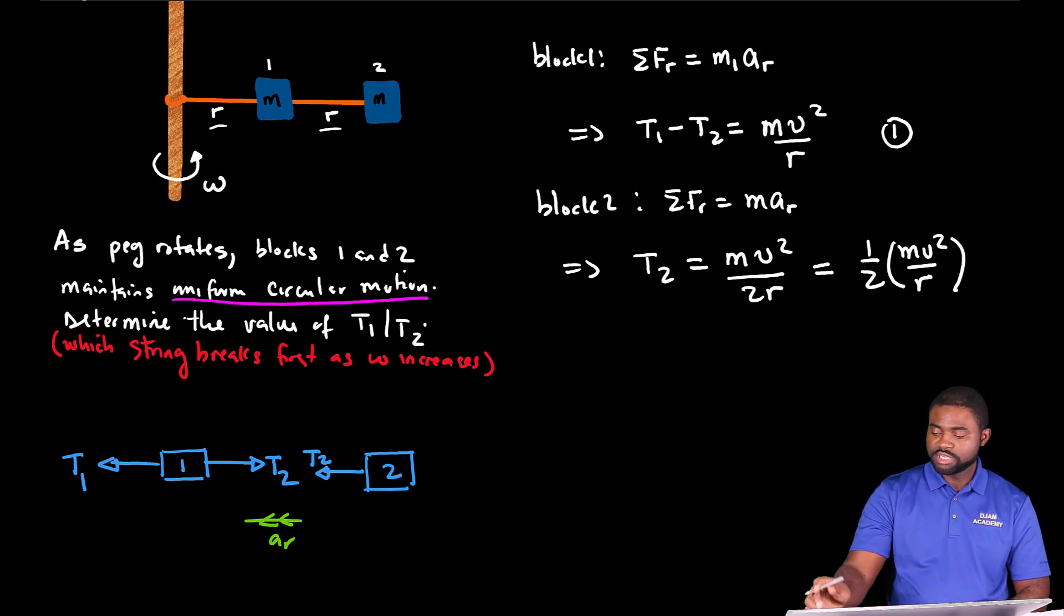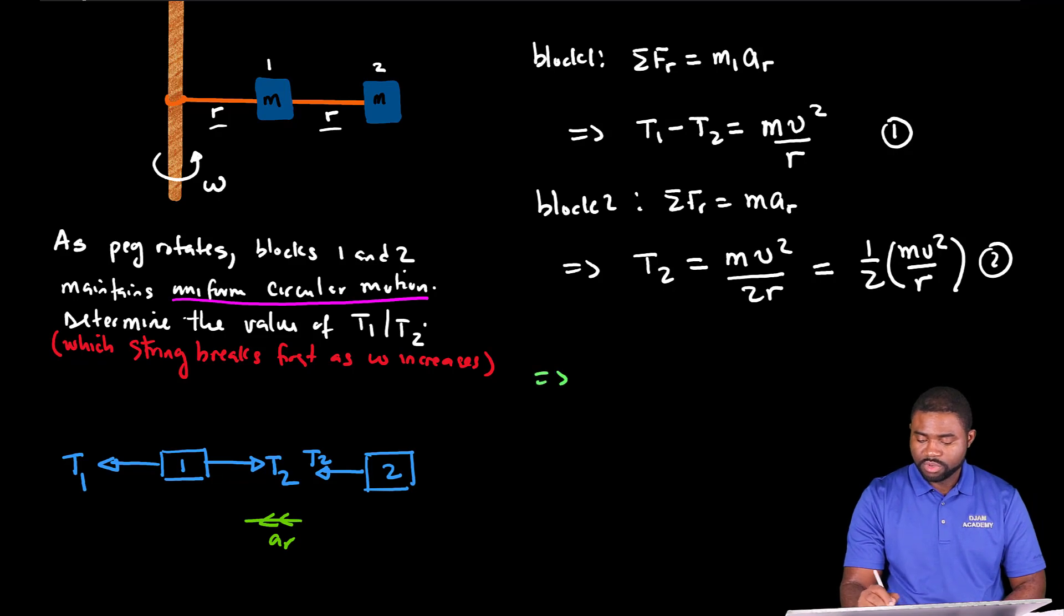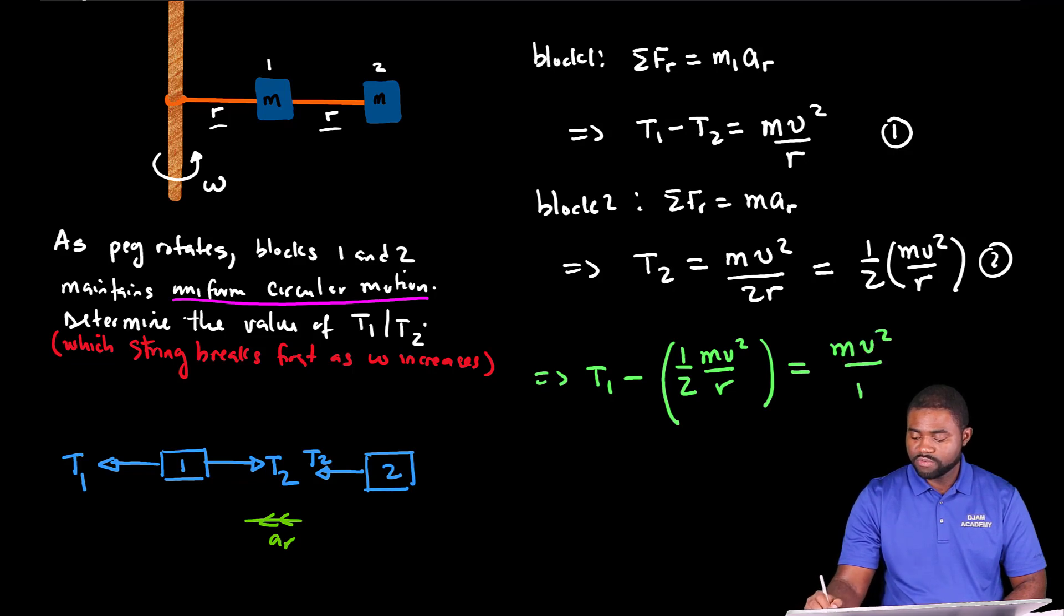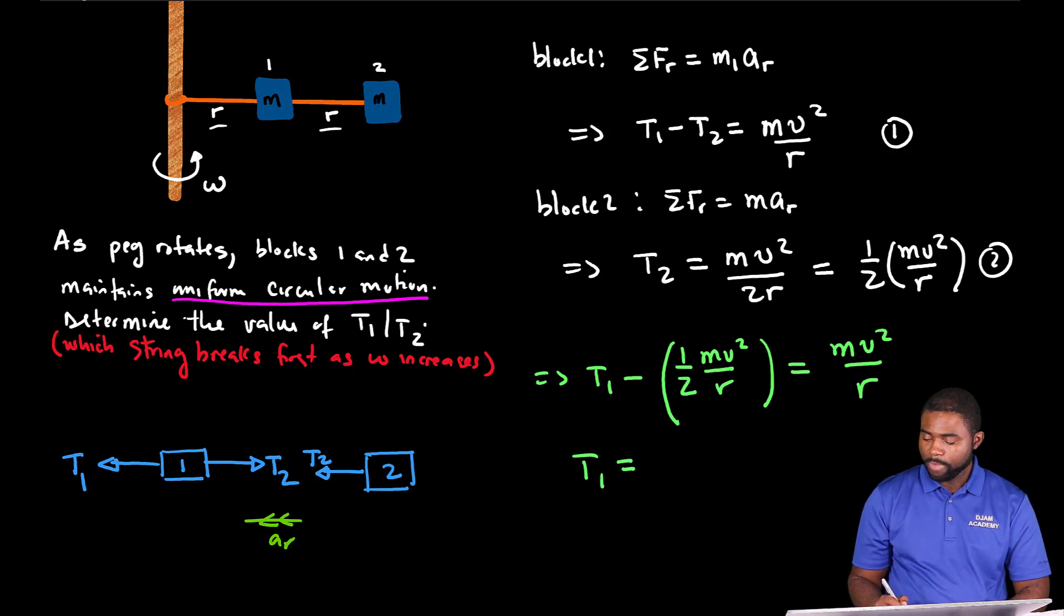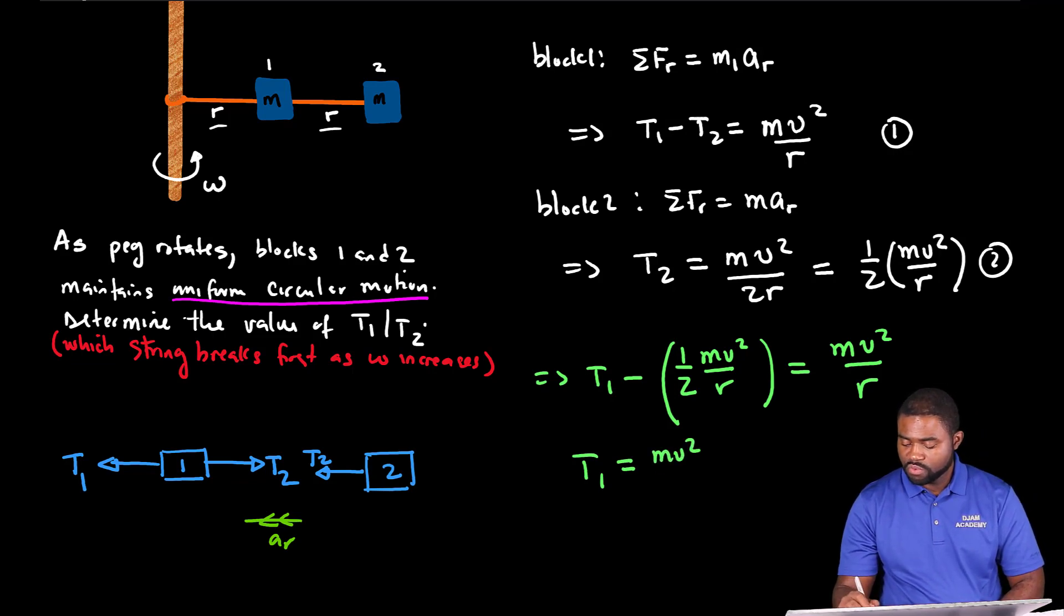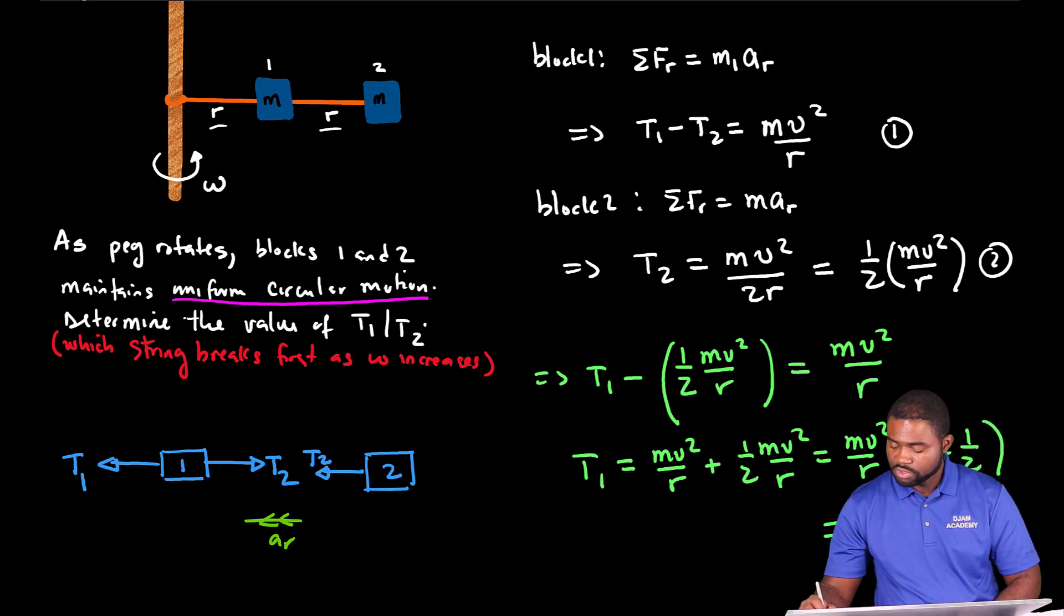So the next question is we need to use this expression of equation two and substitute it in equation one. That would mean that T1 minus bracket one half MV squared over R equals MV squared over R. Which means that T1 will be equal to MV squared over R plus one half MV squared over R, which is the same as three halves MV squared over R.